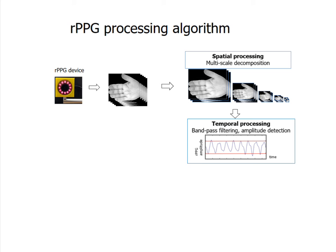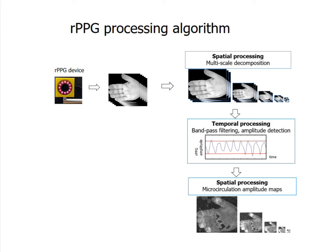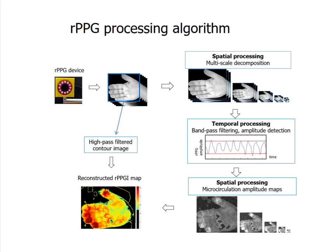Further, the two-dimensional distribution of rPPG amplitude is calculated for each pyramid level. The next step is reconstruction of the amplitude map, done by collapsing the pyramid to obtain the output image. The final step is visualization of the processed rPPG map, which includes normalization, thresholding, and color indexing. Additional improvement of map resolution was achieved by overlaying a high-pass filtered video image onto this map.